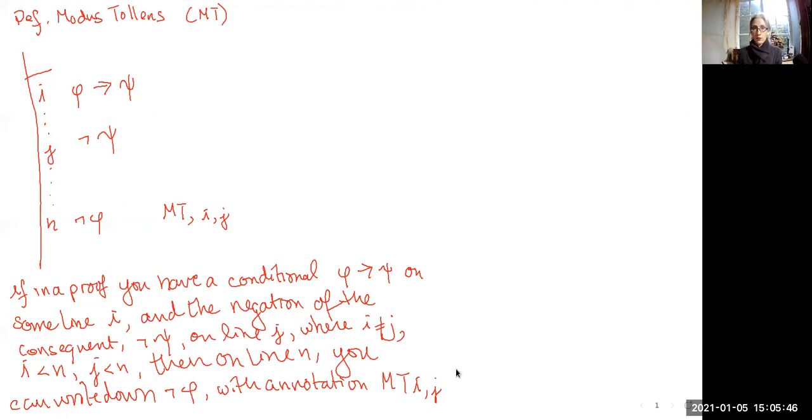It's structurally very similar to the conditional elimination, except instead of going from the antecedent to the consequent, you go from the consequent back to the antecedent. Now, one thing I said in the previous video is that everything that you can prove with the derived rules, you can actually prove without them. You can use just the basic rules. And I'm going to show you an example of this.